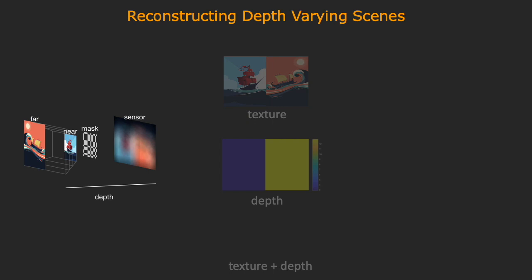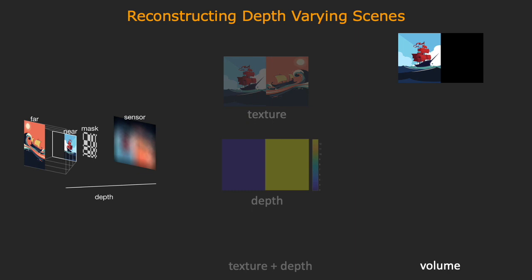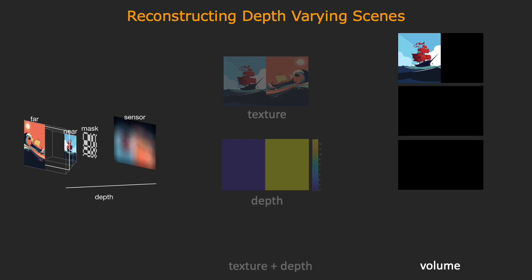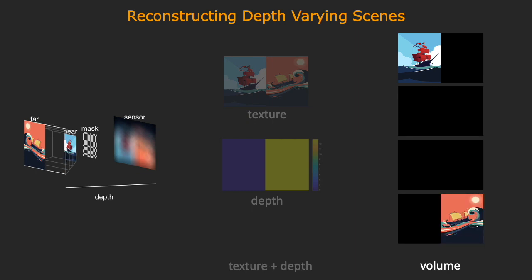The second approach is to model the scene as a volumetric texture or intensity function. This scene would decompose into textures onto multiple depth planes. There needs to be enough number of depth planes in the volume to correctly model surfaces with continuous depth variation. As a result, the number of unknowns becomes much larger than the number of obtained measurements, and reconstruction becomes a severely underdetermined problem.